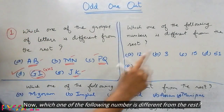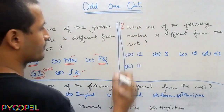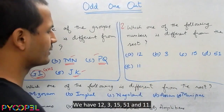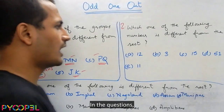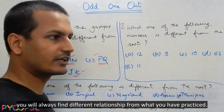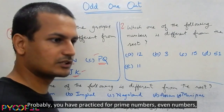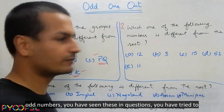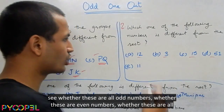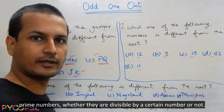Now, which one of the following numbers is different from the rest? Question number two. We have 12, 3, 15, 51, and 11. In these questions, you'll always find a different relationship from what you have practiced. You've probably practiced for prime numbers, even numbers, odd numbers, or whether they're divisible by a certain number.